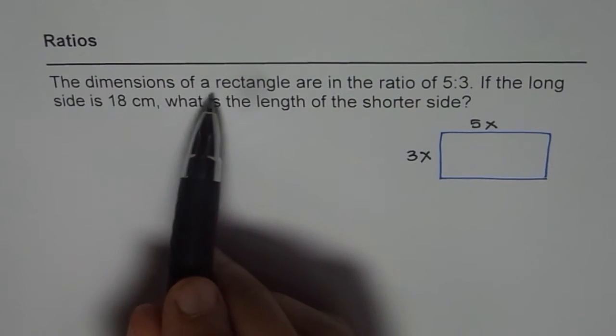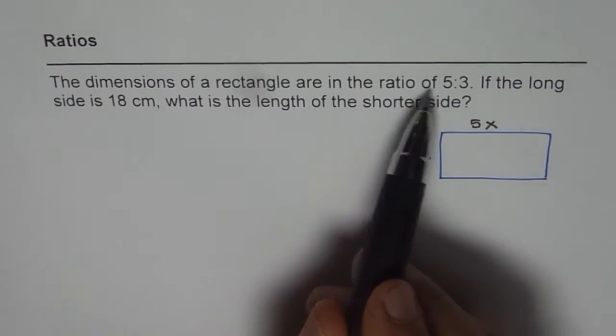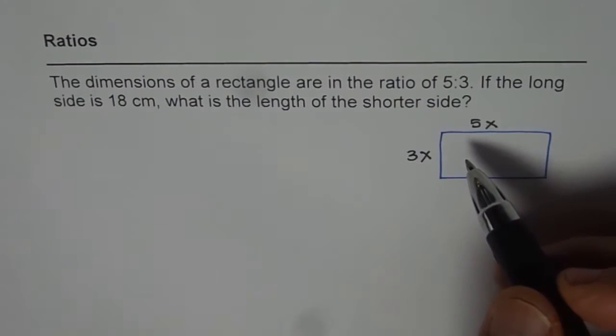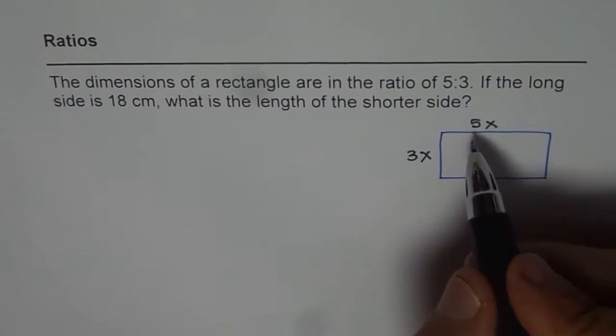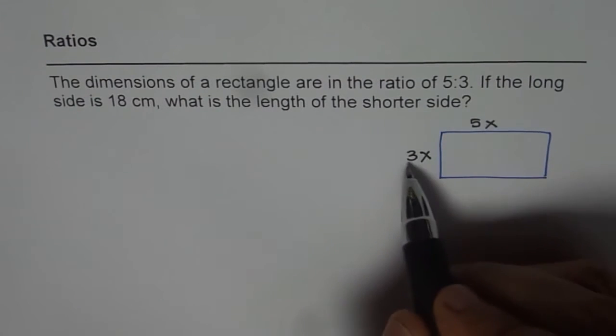The dimensions of a rectangle are in the ratio of 5 is to 3. So that means 5 over 3 is a constant, and let that be x. So 5x and 3x, that is the ratio of 5 is to 3.